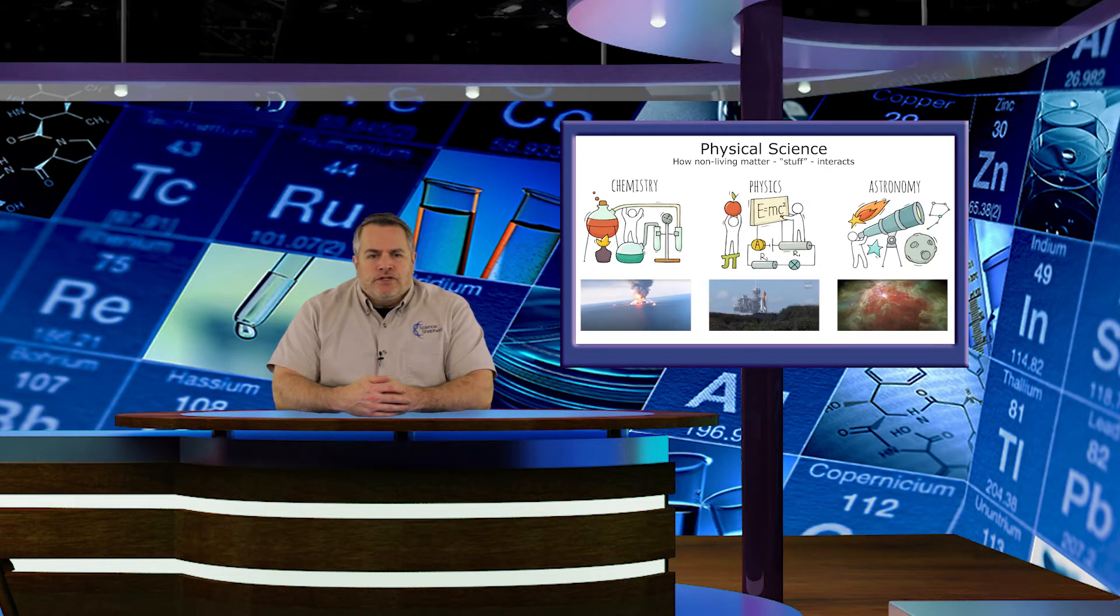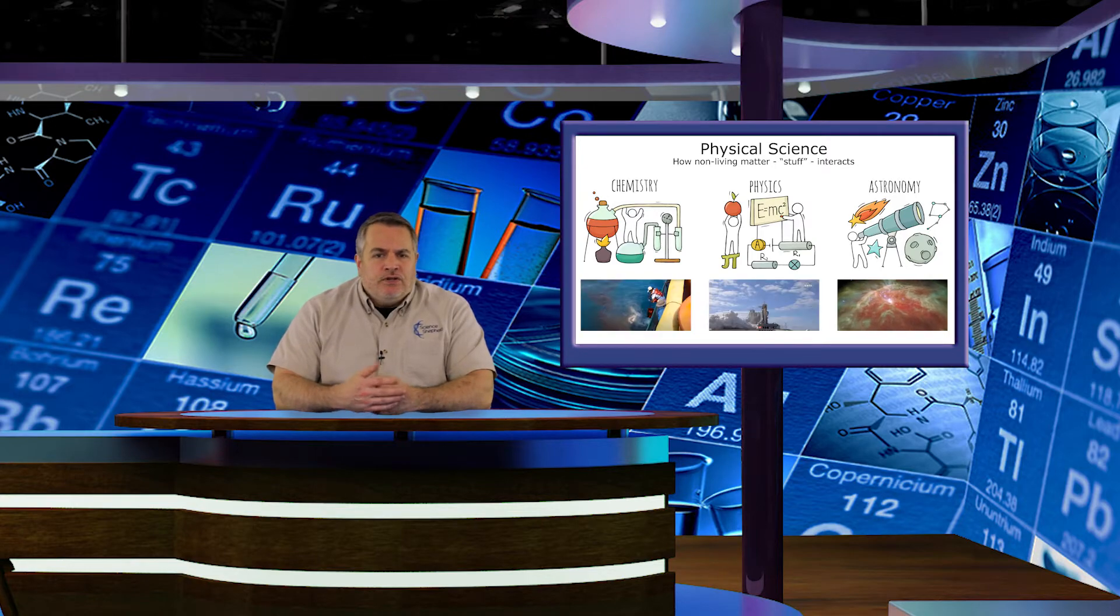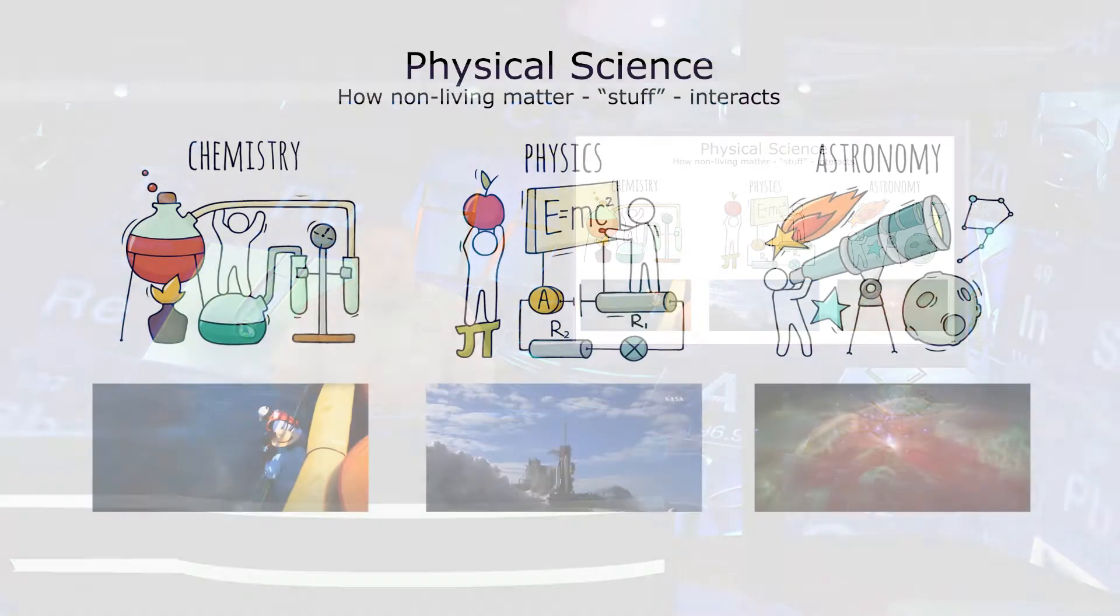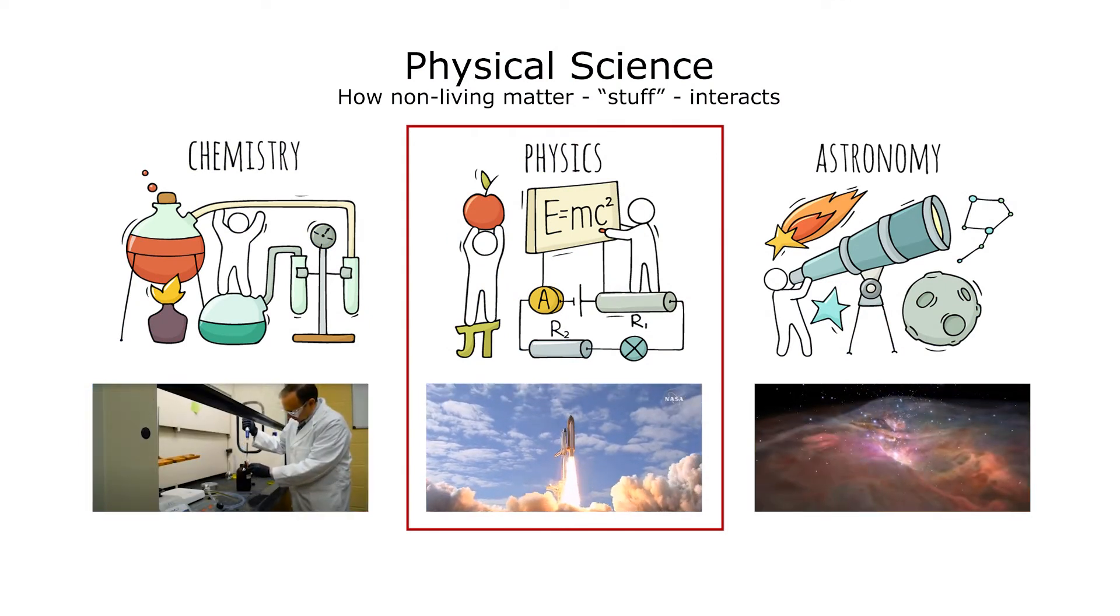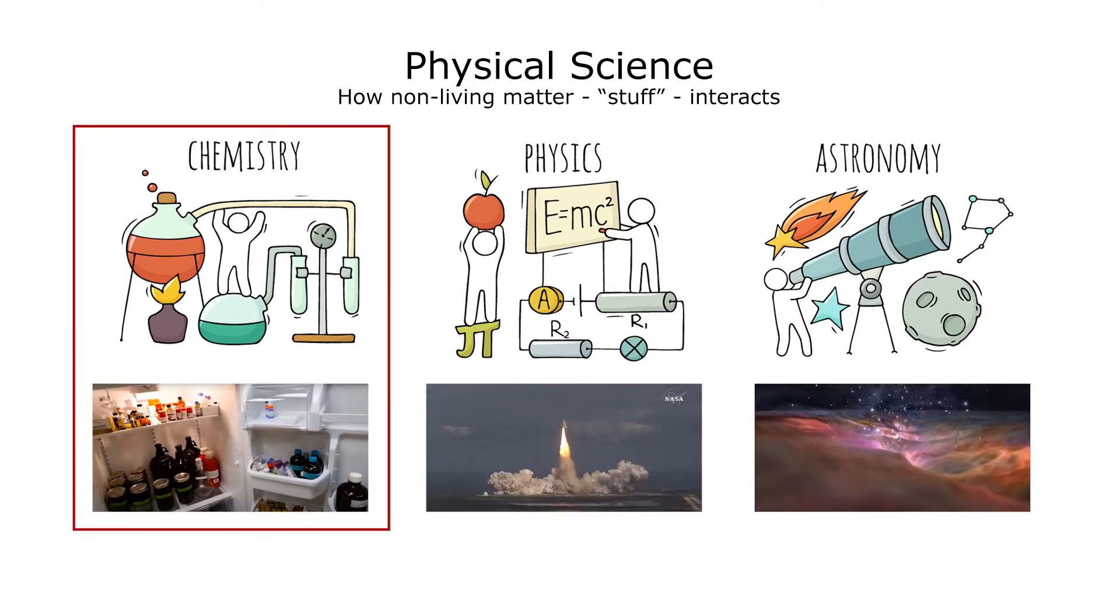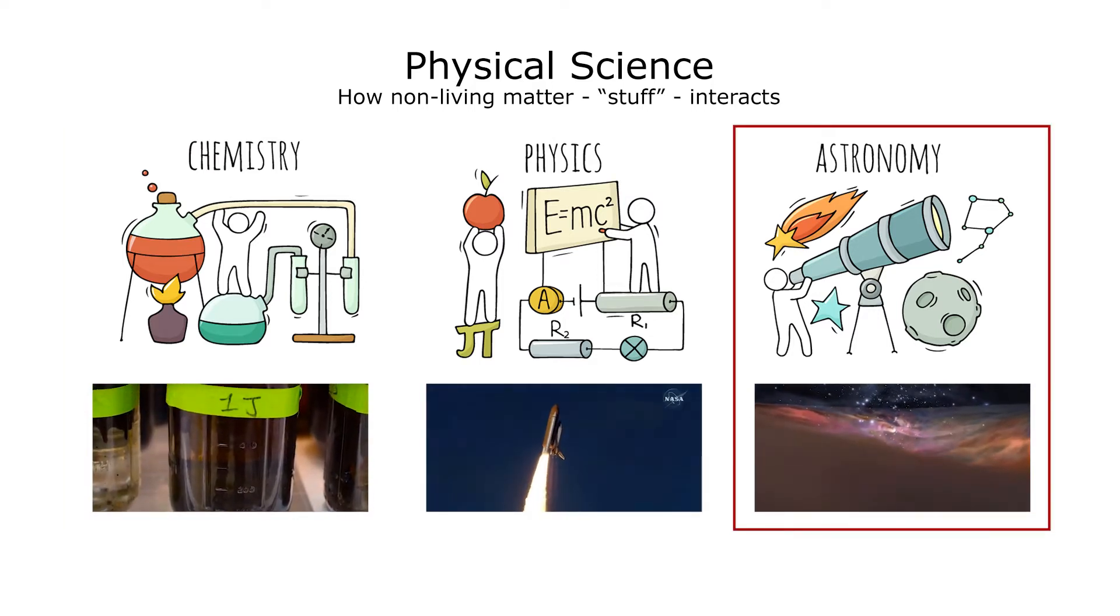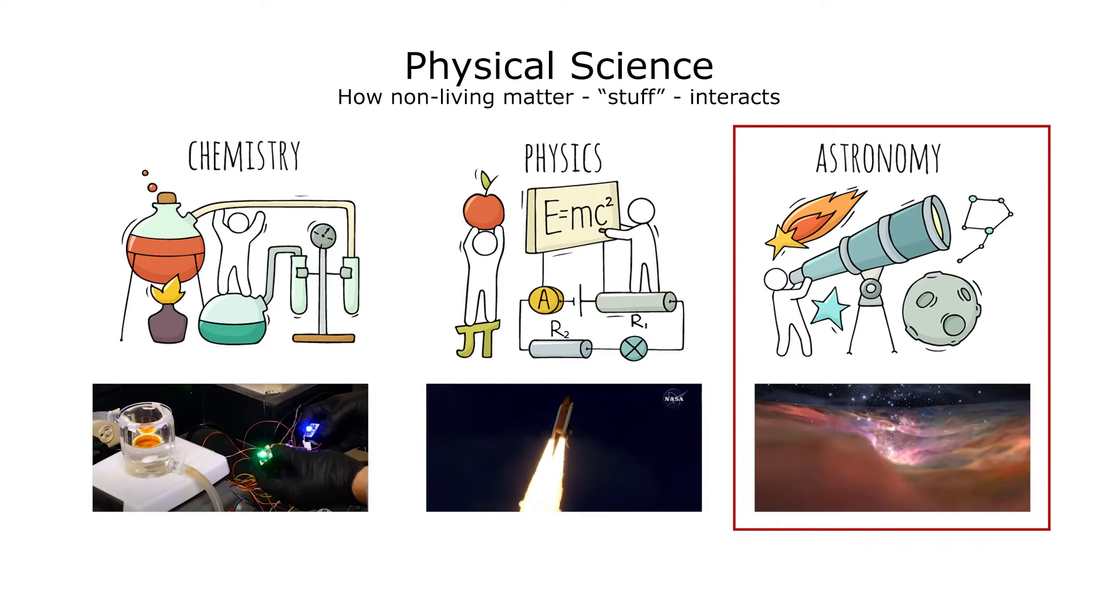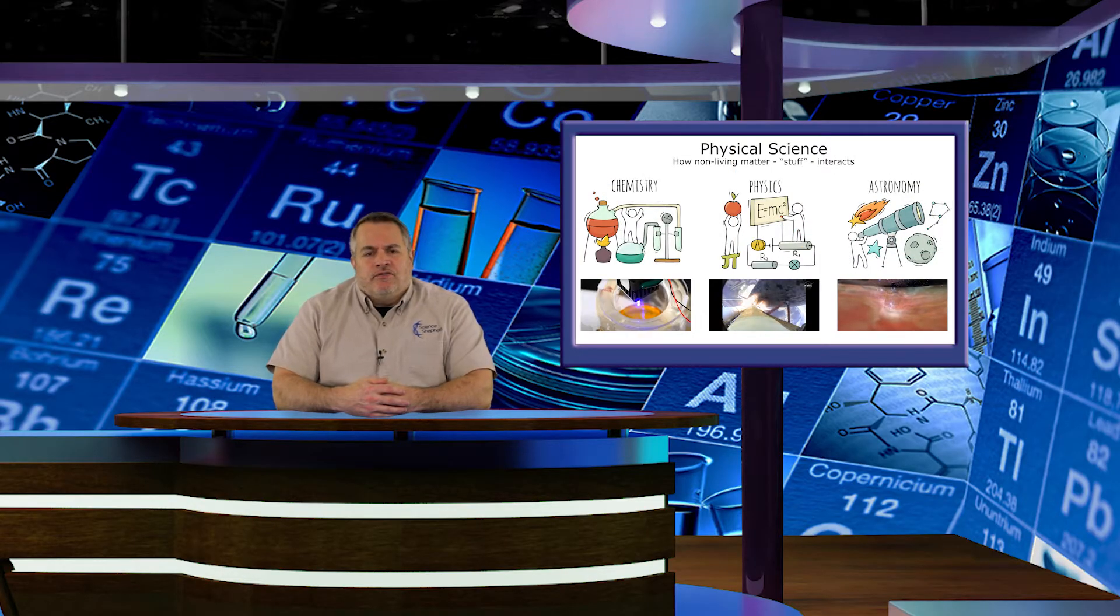It may seem a little strange to group those three subjects together into the same class, but physical science is all about the way that non-living things are structured and how they interact. It's really all a matter of scale between the three sciences. In general, physics is a study of how objects that we can usually see and feel move and interact with each other. Chemistry is the study of how really tiny stuff, like individual atoms and molecules, interact. And astronomy is the study of how really huge stuff, like planets, stars, and galaxies, interact. So, making them in the same class makes a little bit more sense than it might seem at first.